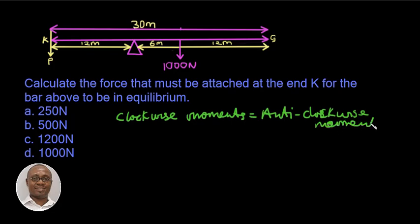And the clockwise moment is equal to the force times the distance away from the fulcrum. So on the clockwise direction, which is the right, we have the force as one thousand times the distance away from the fulcrum, which is six meters.